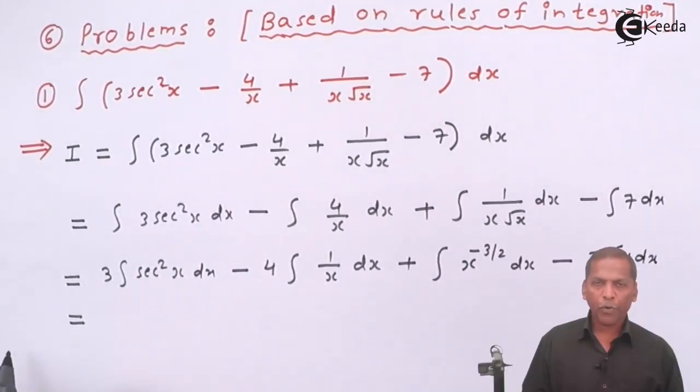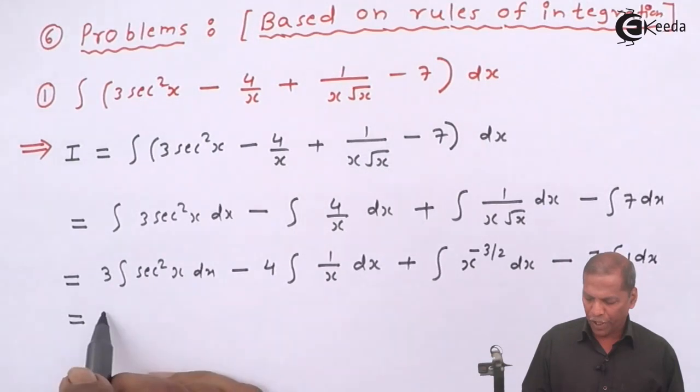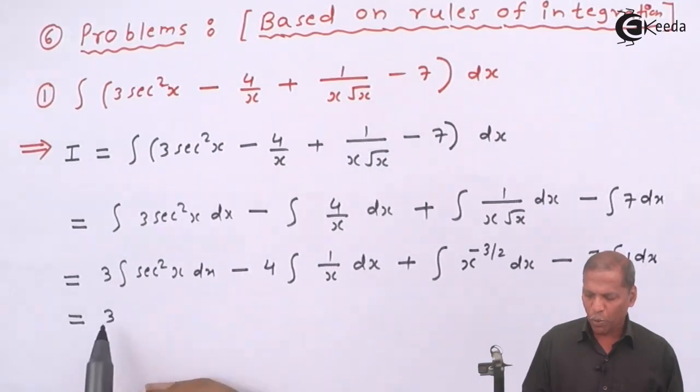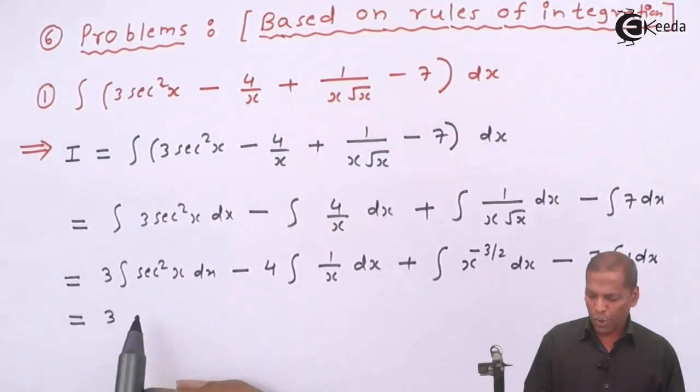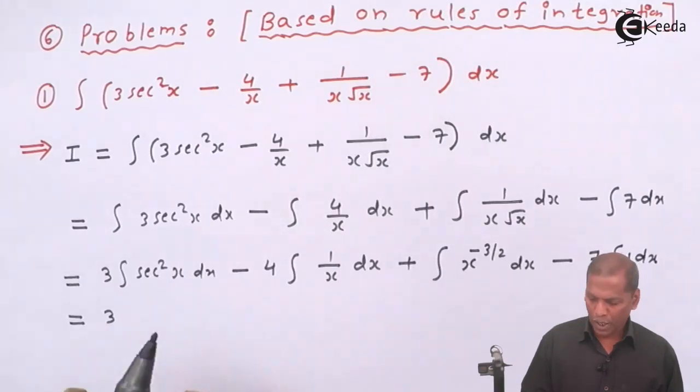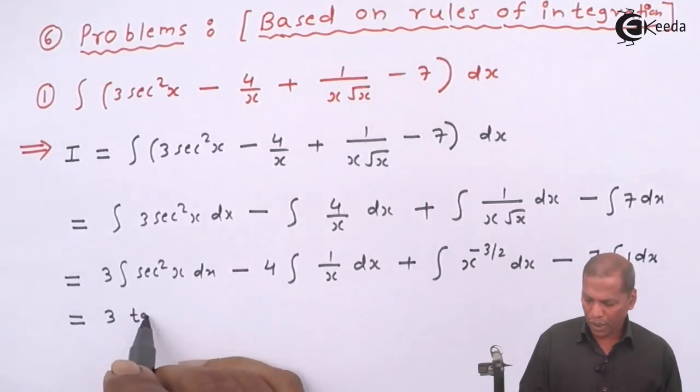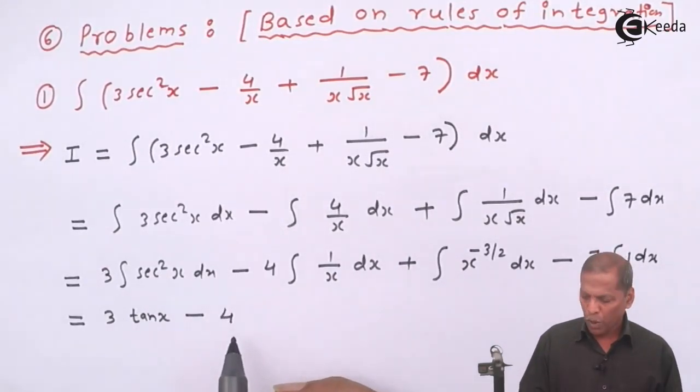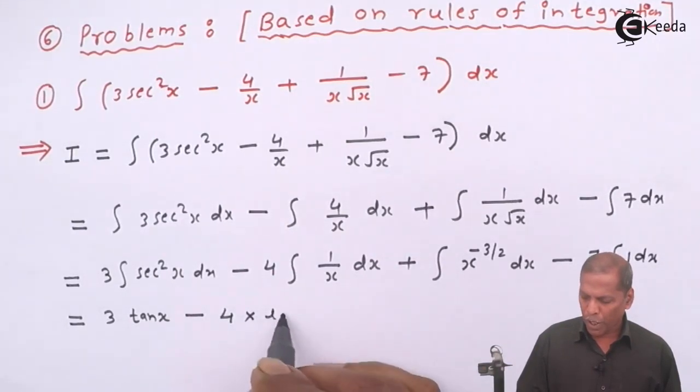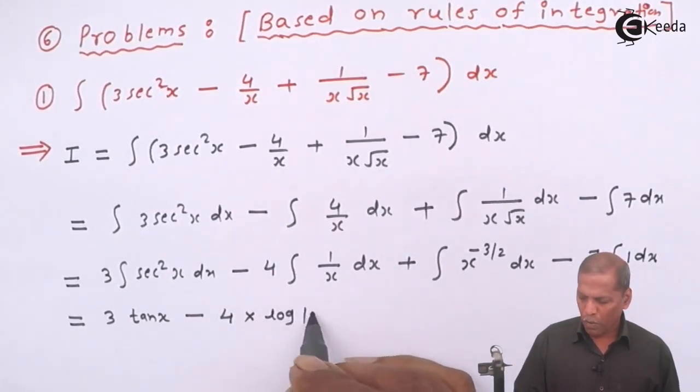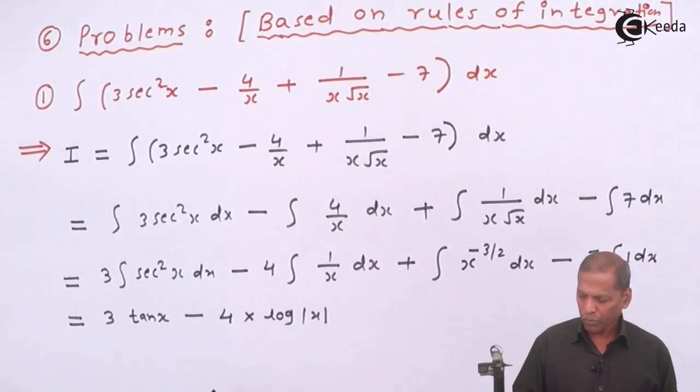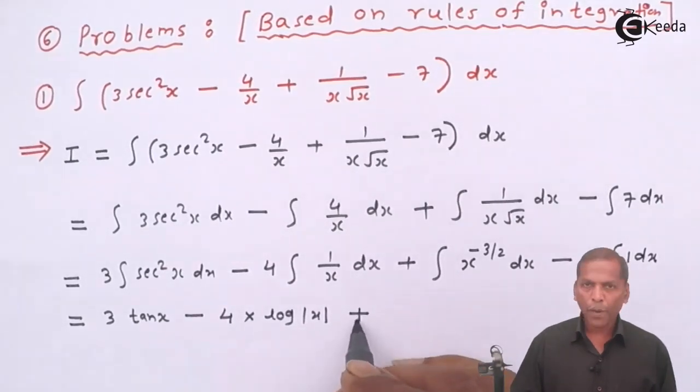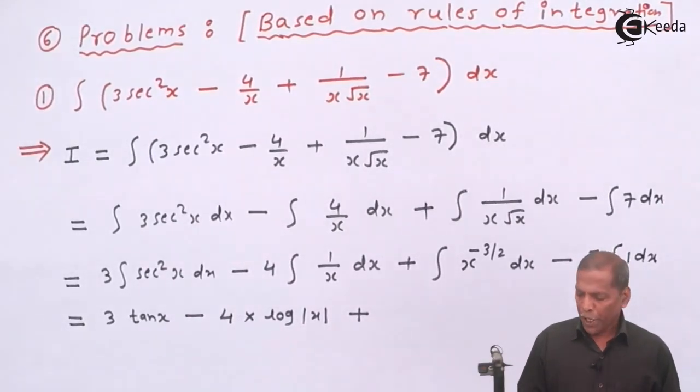The next step will be, we write 3 as it is. Now, integration of sec square x dx is tan x. Then minus 4 into integral of 1 upon x, that gives us log mod x. Then plus.